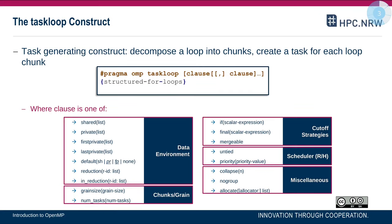What is a task loop construct? It's a task generating construct. We learned about the pragma omp task construct so far, and task loop to some extent is similar. It decomposes the loop into chunks, similar to pragma omp parallel for, but instead of executing these chunks by the threads in the team, it creates a task for each loop chunk. The OpenMP runtime then maps the tasks to the threads available in the team.